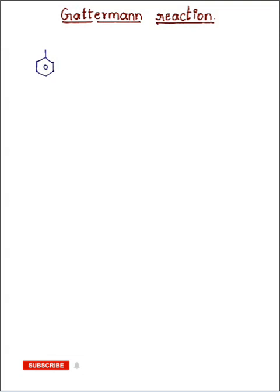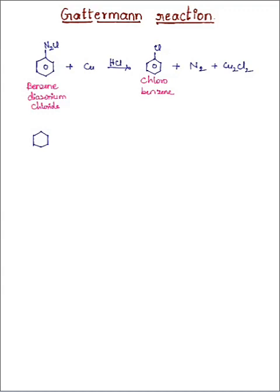In Gattermann reaction, benzene diazonium chloride is reacting with copper powder in the presence of HCl. It gives chlorobenzene and N2 gas plus Cu2Cl2, that we call cuprous chloride.